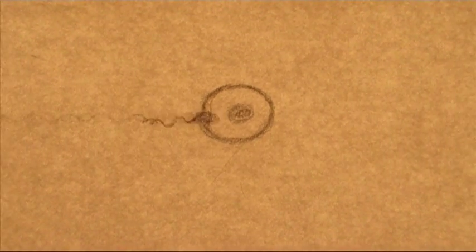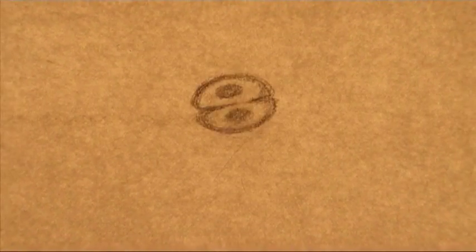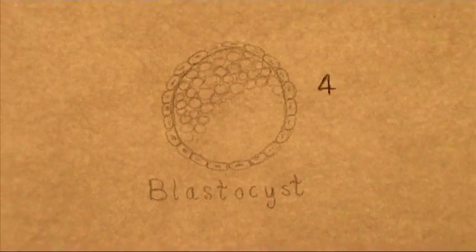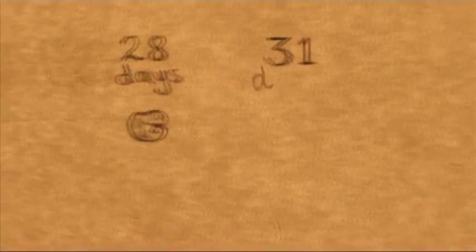Life begins with one cell, the fertilised egg. Throughout development, cells divide over and over again to produce the billions of cells that make up the body.